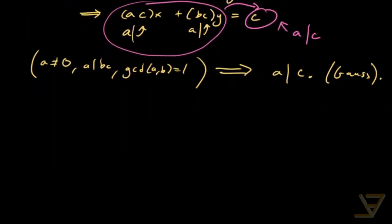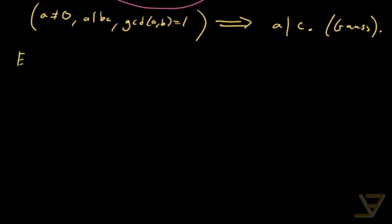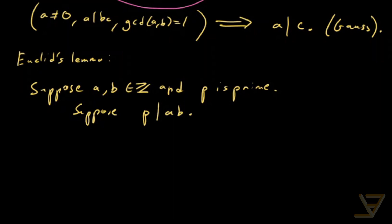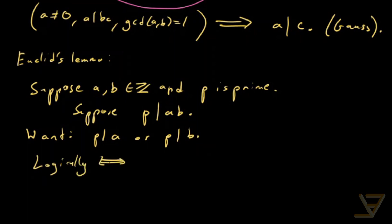So let's use this now to prove Euclid's lemma. Suppose A and B are integers and P is prime, and suppose P divides A times B. Here's what we want to prove: we want to prove that P divides A or P divides B. And this is logically equivalent to saying that P doesn't divide A implies P divides B.